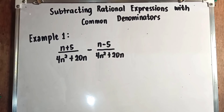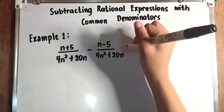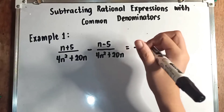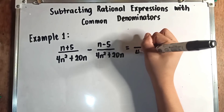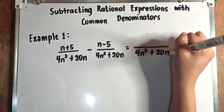Now let's proceed to subtracting rational expressions with common denominators. Example number 1: (n plus 5) over (4n squared plus 20n) minus (n minus 5) over (4n squared plus 20n). Same as subtracting fractions, we will only copy the denominator, which is 4n squared plus 20n.